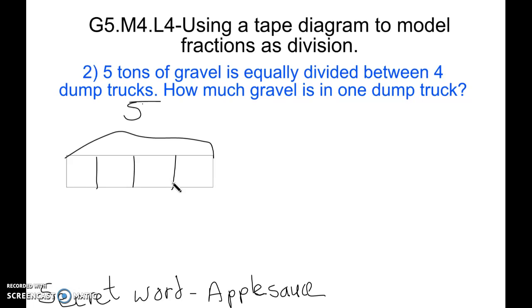So our division problem then comes out to be five tons divided into four trucks is going to tell us how much is in each truck. Well five divided by four is one. One times four is four, leaving us with the remainder of one.